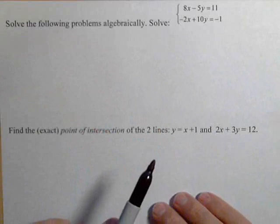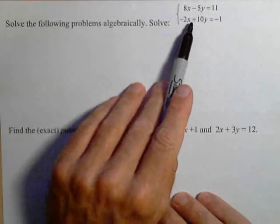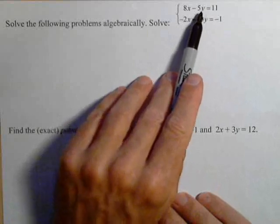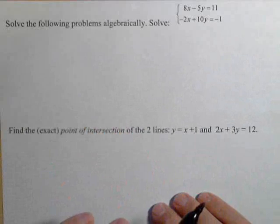Now the first one, we have two equations with two variables, and what we might notice is we got a negative 5y and a positive 10y. So we're going to use elimination in this problem.